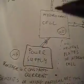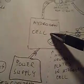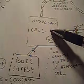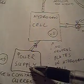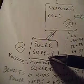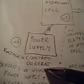And third part is the whole system. So we have here a hydrogen cell without neutral plates, connected to a power supply, power supply voltage to constant current.